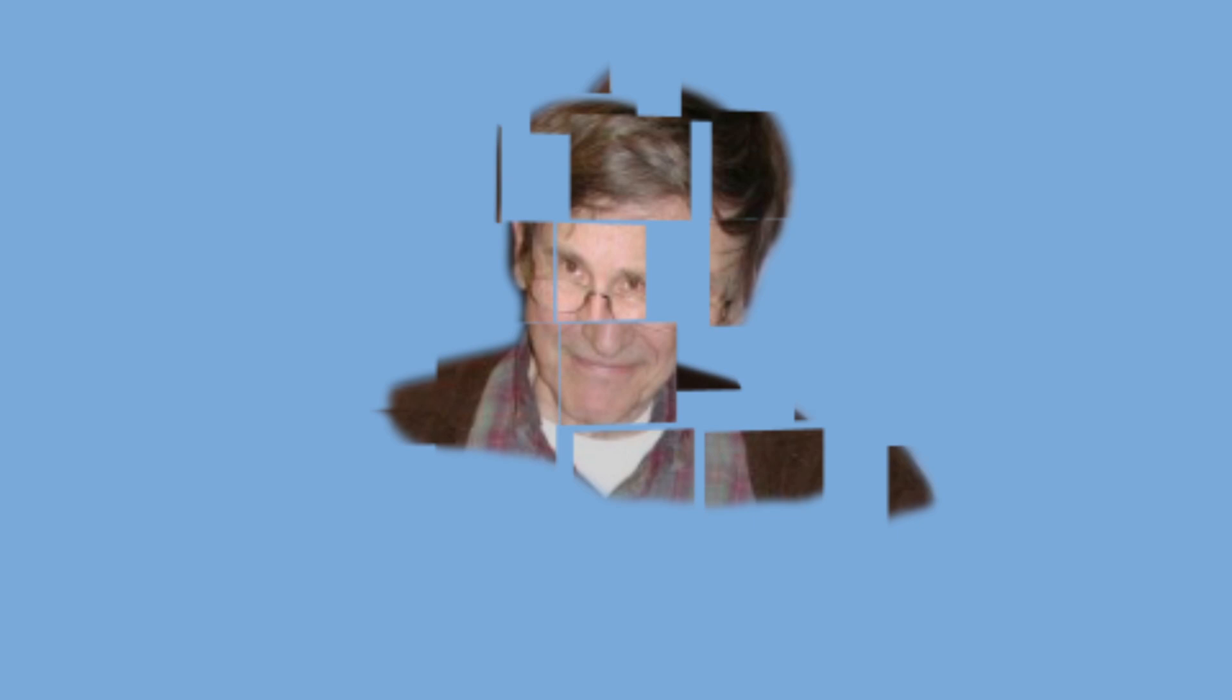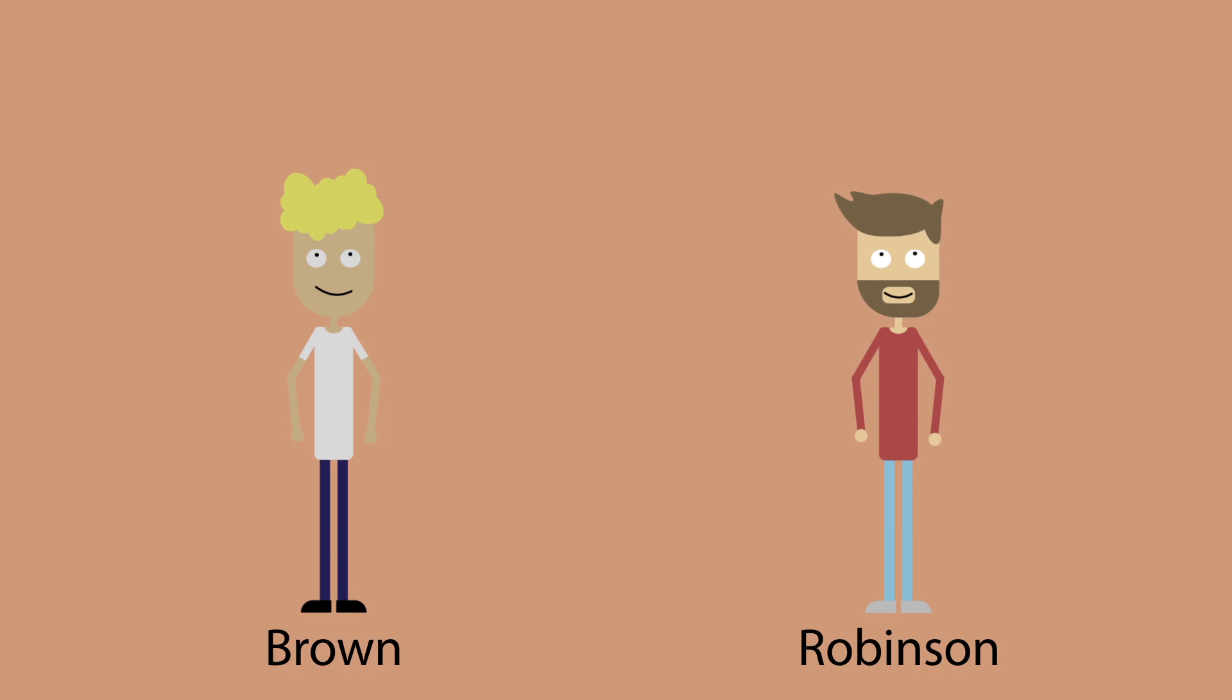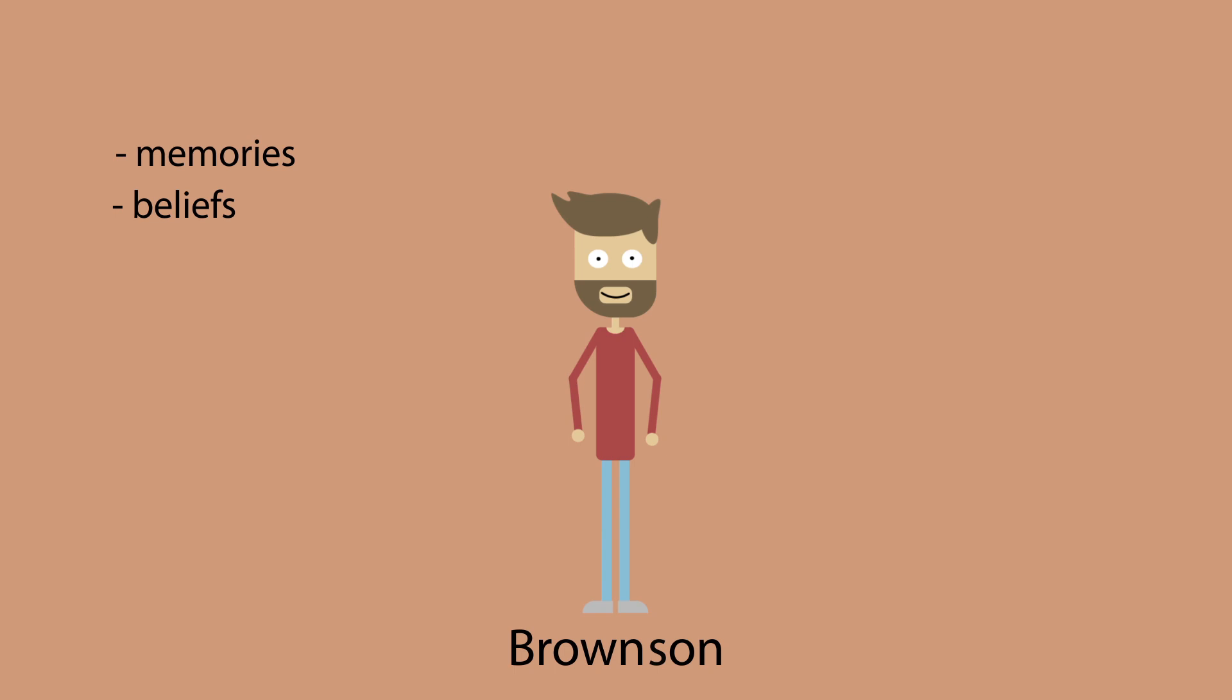The philosopher Sidney Shoemaker criticizes the bodily continuity theory with the story of Brownson. Imagine two people, Brown and Robinson, are both undergoing brain surgery which involves removing their brains before replacing them back again. Unfortunately, Brown's brain is mistakenly inserted into Robinson's head, and Robinson's brain is put into Brown's head. The latter patient dies during the surgery, leaving only the person with Robinson's body containing Brown's brain. This person, which we'll call Brownson, has all the memories, beliefs, attitudes and personality of Brown, but the body of Robinson. Most people would say that Brownson is identical with Brown, and not Robinson.